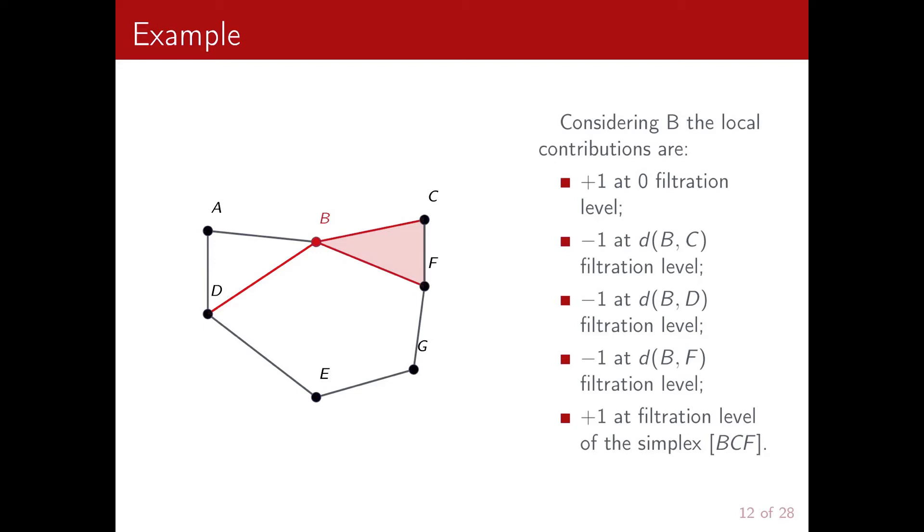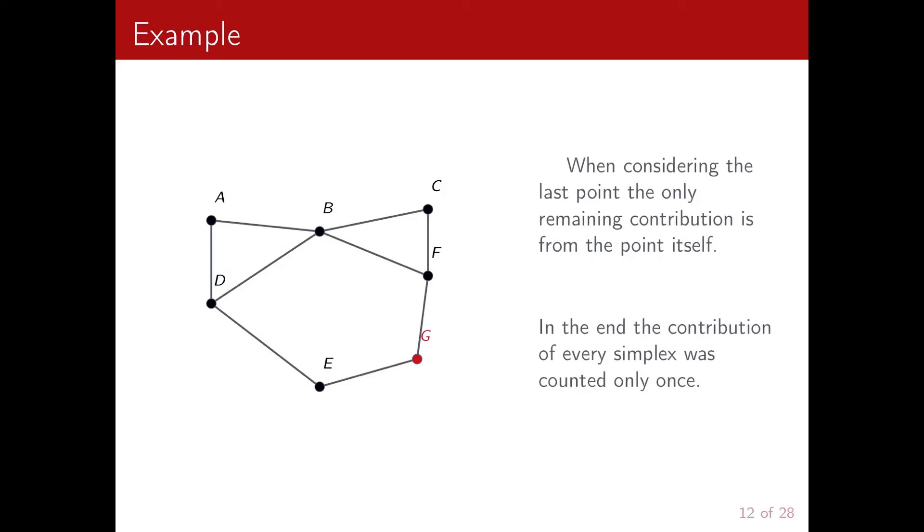And so over here we take the star with respect to B and we have another list of local contributions. So we can repeat this procedure for every point.